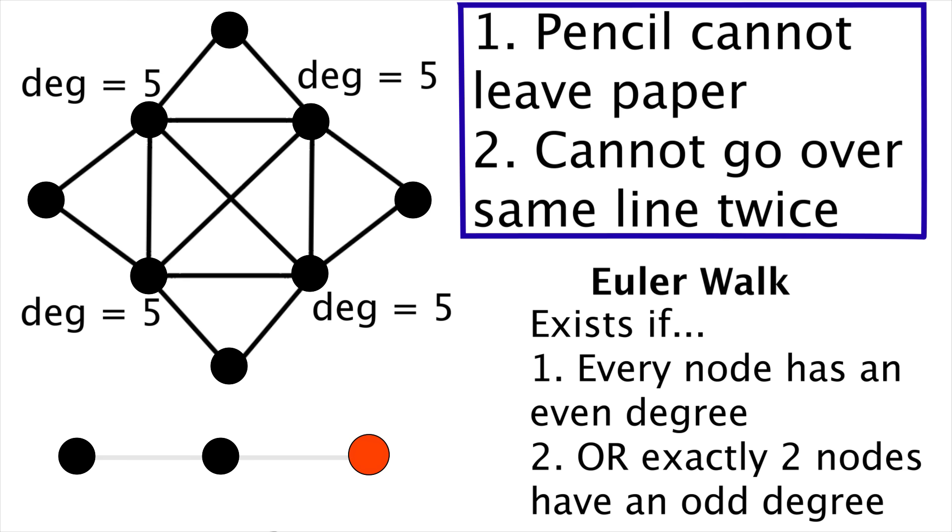Like here, this node has an even degree, but these two have odd degrees. And since it's exactly two that have odd degrees, the criteria for an Euler walk is met.